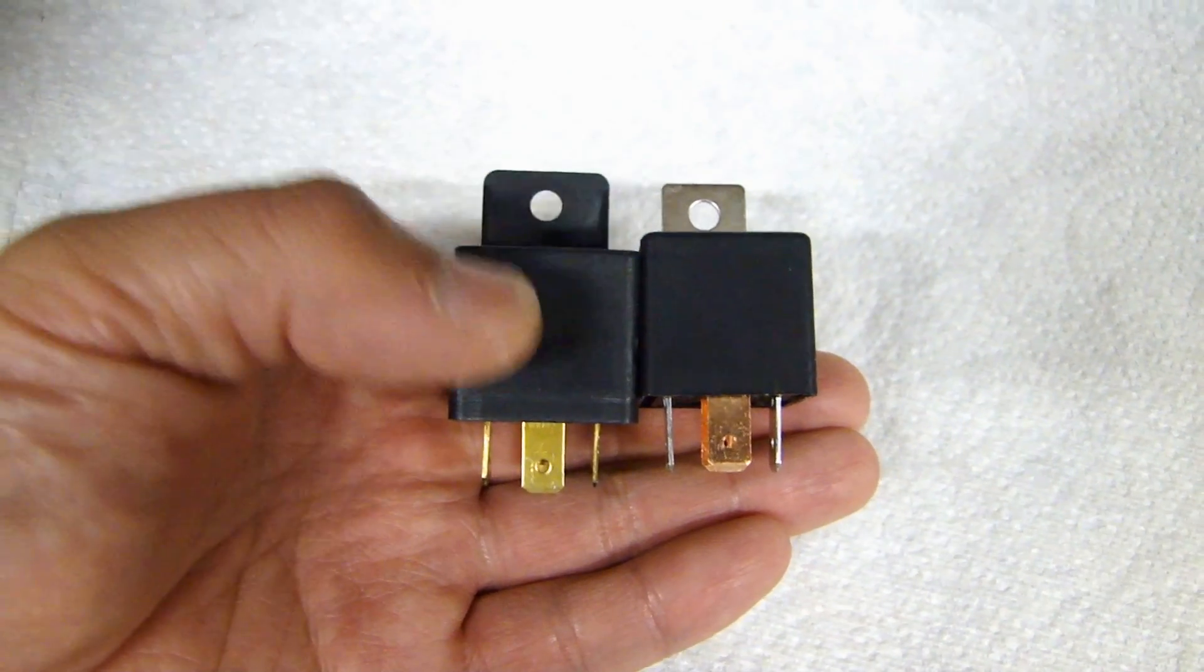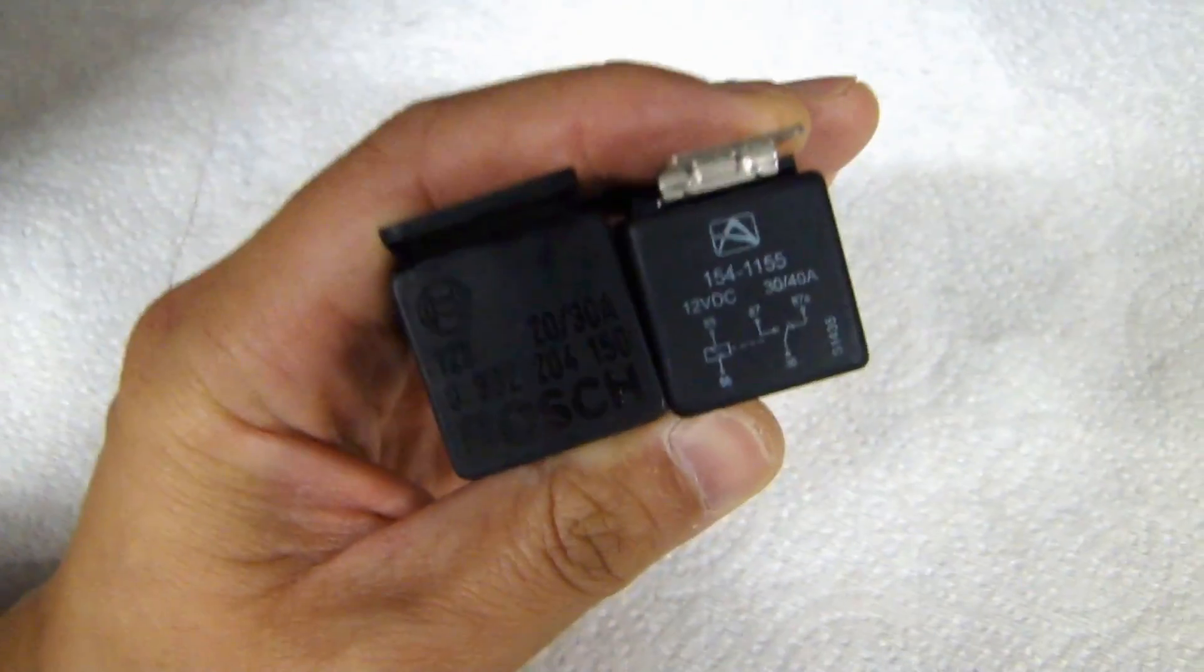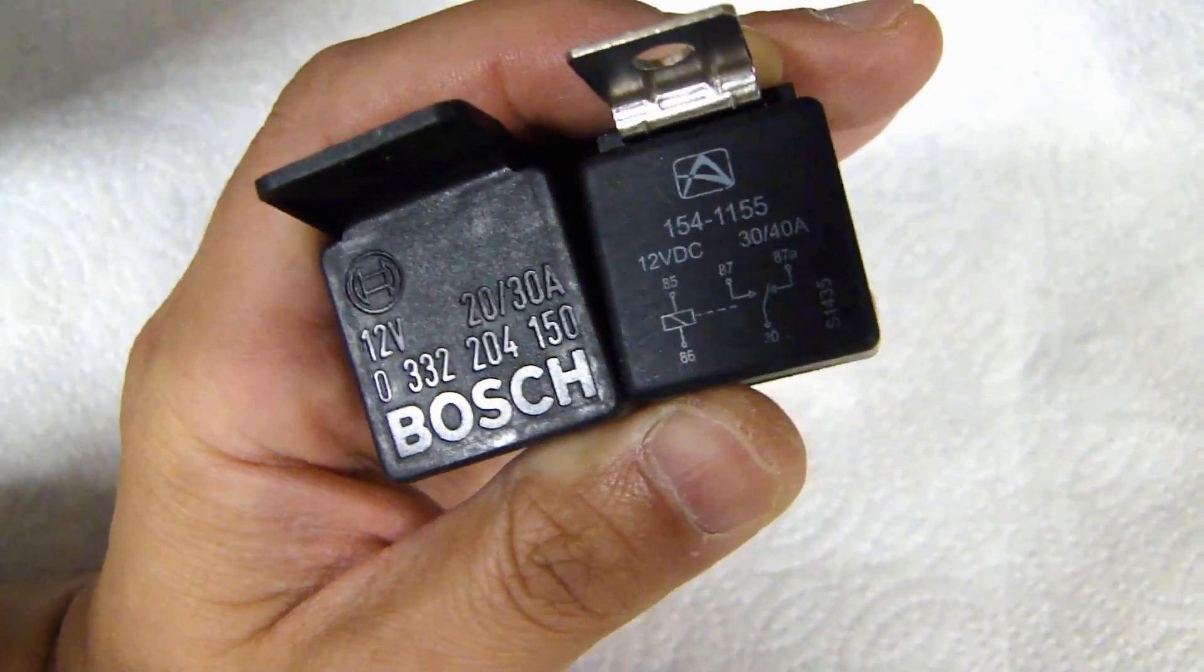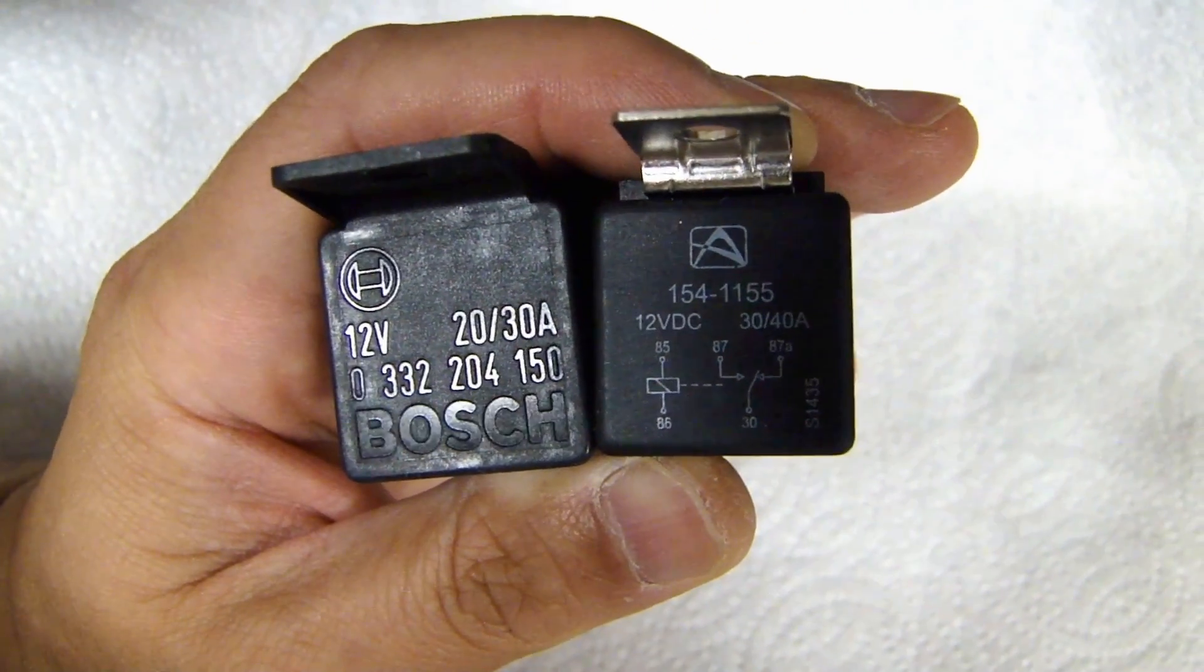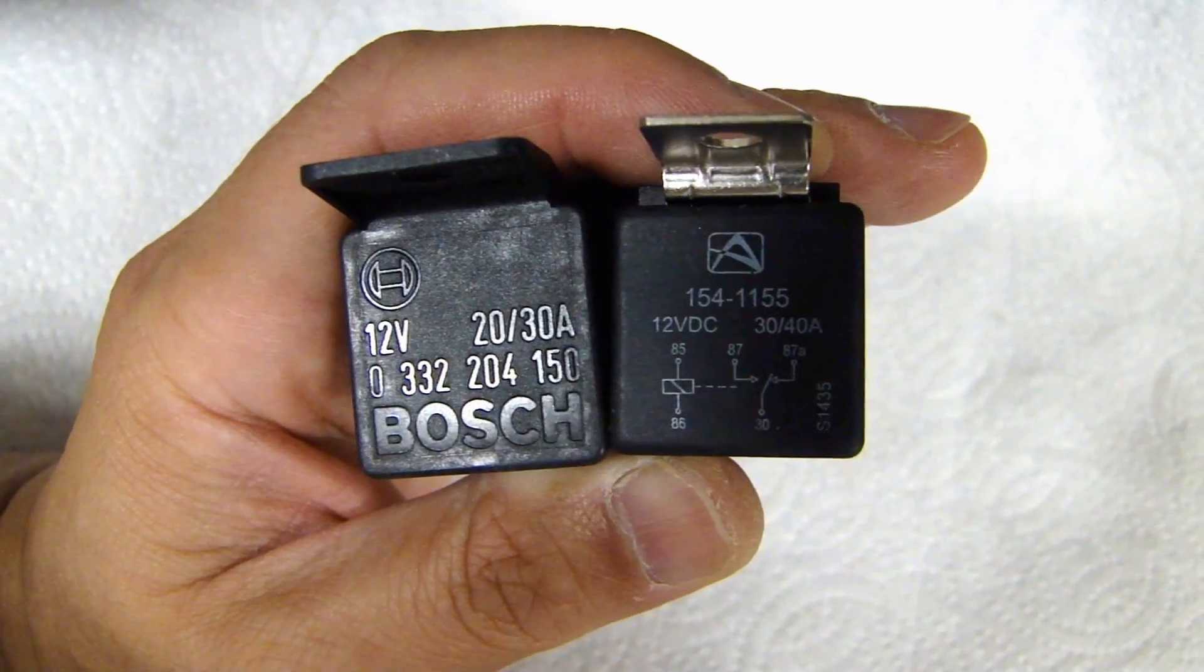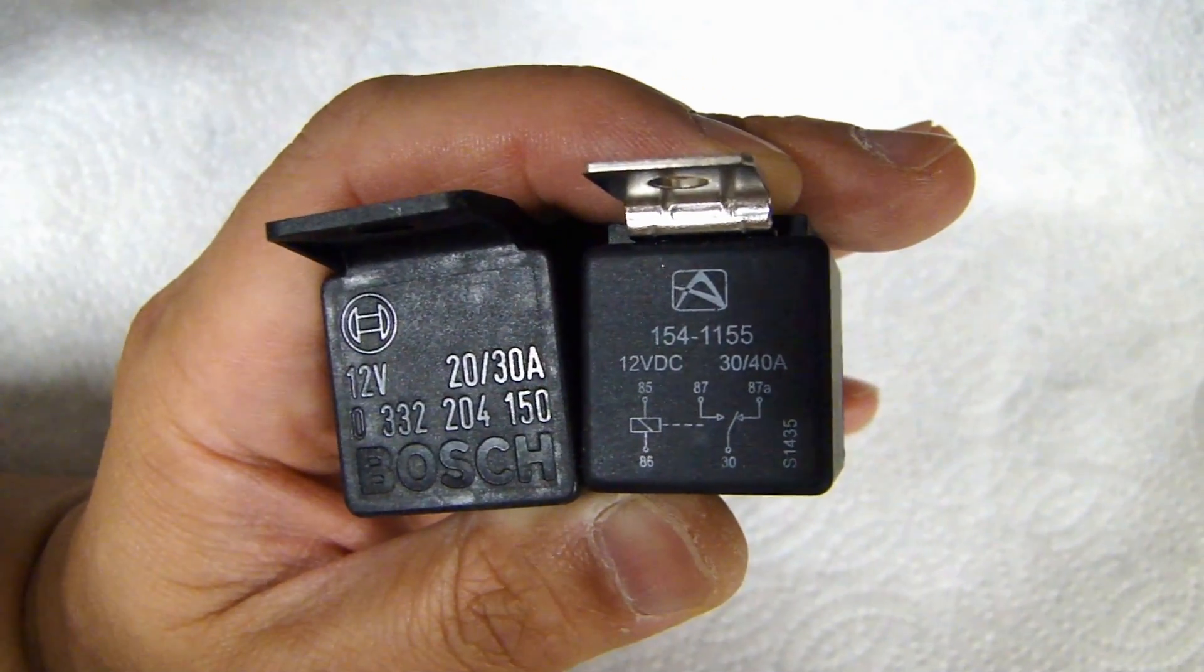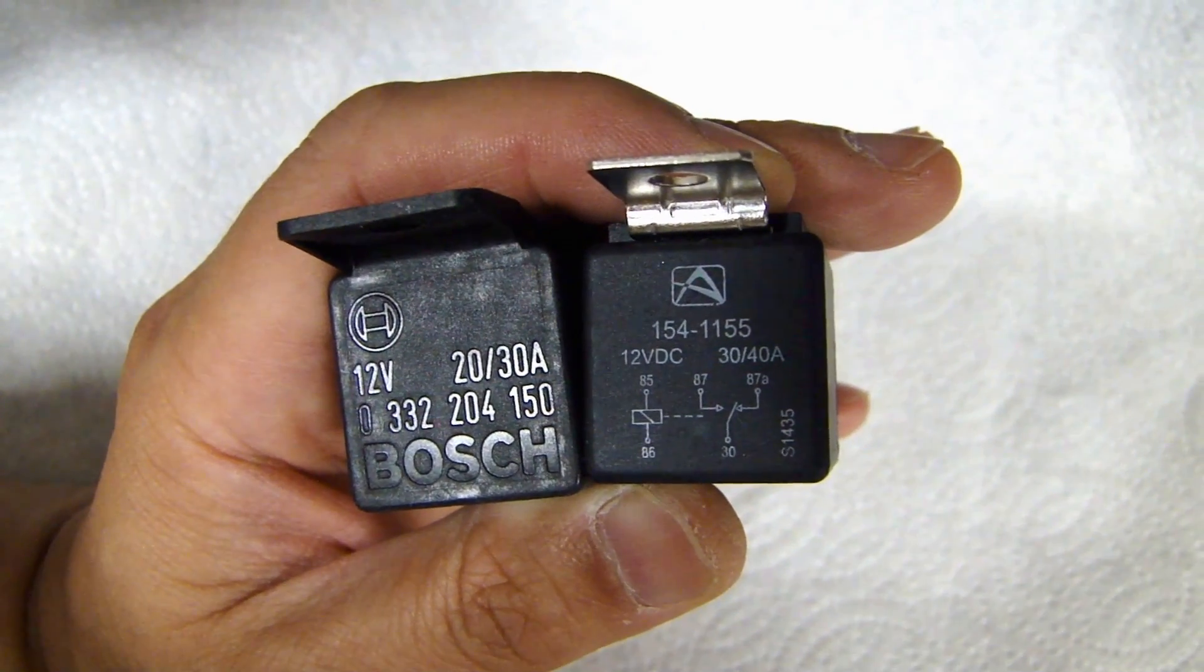Here I have two other relays that are single pole, double throw. If you look at the top marking on these relays, the one on the left, made by Bosch, has a marking of 20-slash-30A, or 30A. The one on the right has a marking of 30-slash-40A.